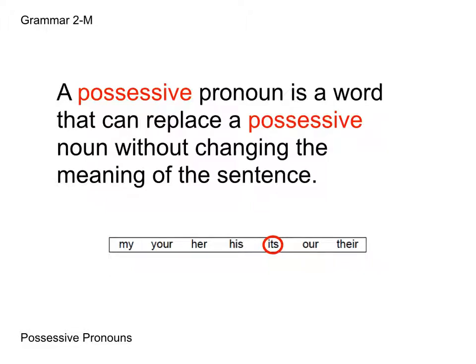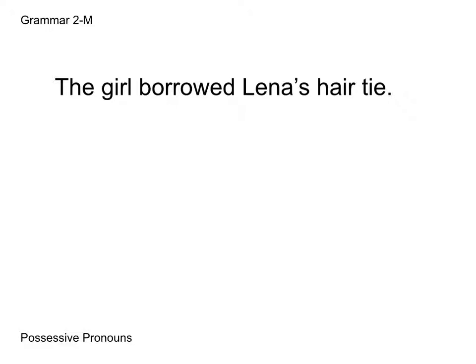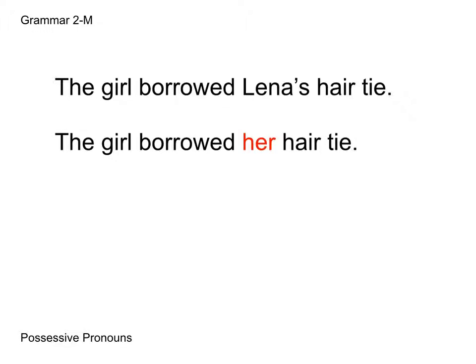Let's look at an example sentence: "The girl borrowed Lena's hair tie." We are going to replace "Lena's," the possessive noun, with a possessive pronoun, and it will become "The girl borrowed her hair tie." You can see that "her" is replacing "Lena's" without changing the meaning of the sentence. Also, "her" is acting as an adjective for "tie," with "hair" telling you what kind of tie it is.